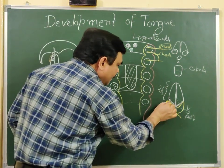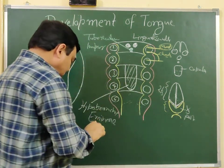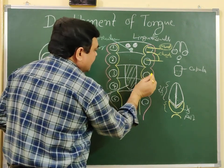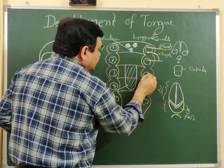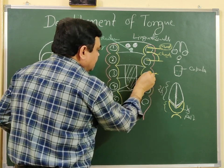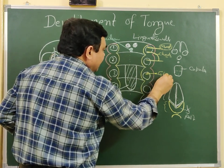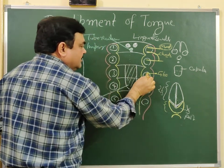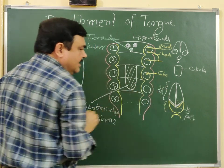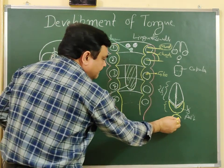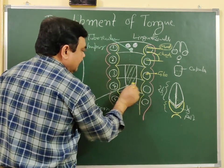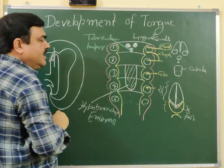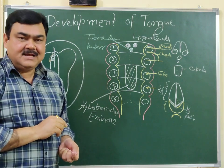The posterior one-third of the tongue is supplied by the glossopharyngeal nerve. It develops from the third arch, so it is supplied by the glossopharyngeal nerve. And this part — the posterior-most part — develops from the fourth arch. The nerve of the fourth arch is the superior laryngeal nerve, which is a branch of the vagus nerve.